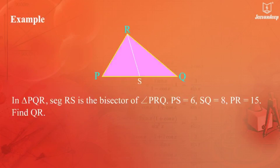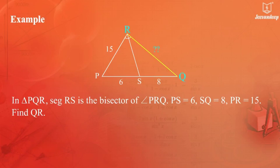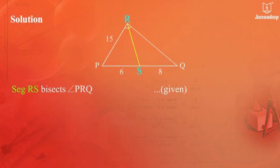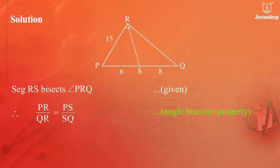Example: In triangle PQR, segment RS is the bisector of angle PRQ. PS equals 6, SQ equals 8, and PR equals 15. Find QR. Segment RS bisects angle PRQ as given. Therefore, according to the angle bisector property, PR upon QR equals PS upon SQ.